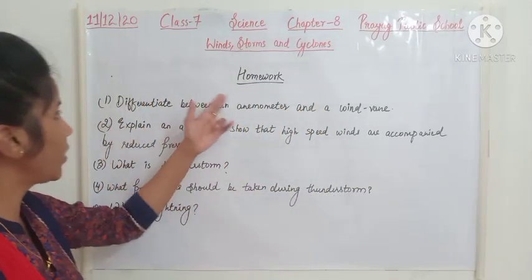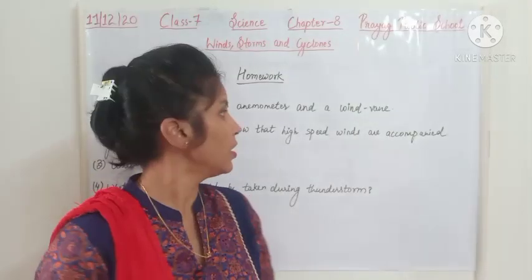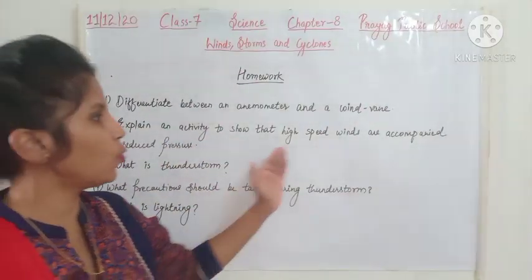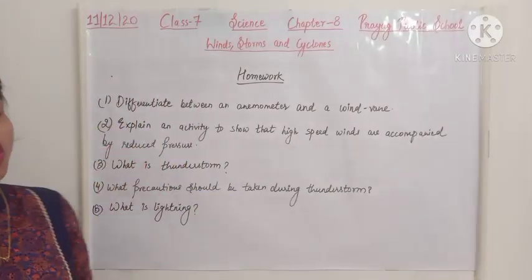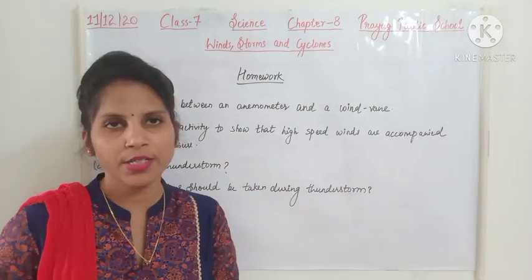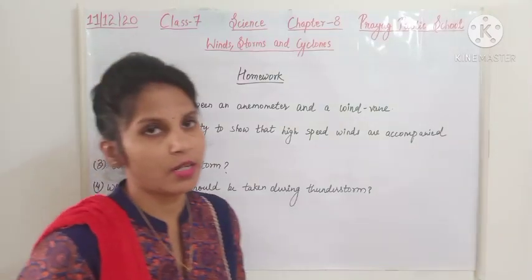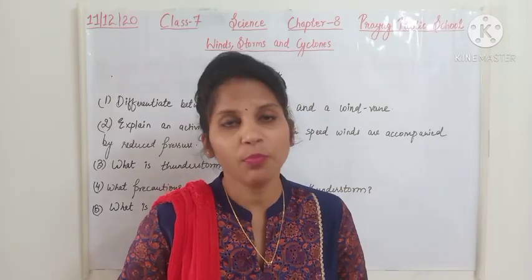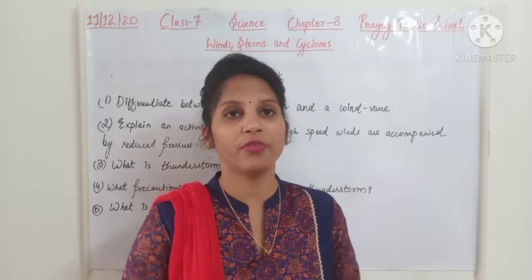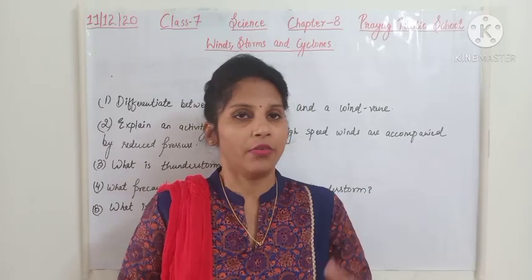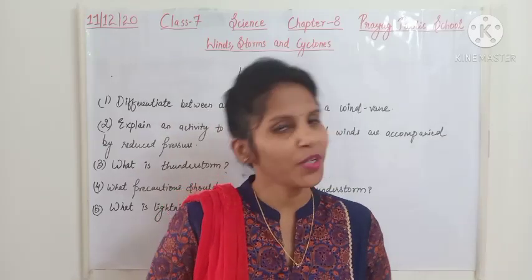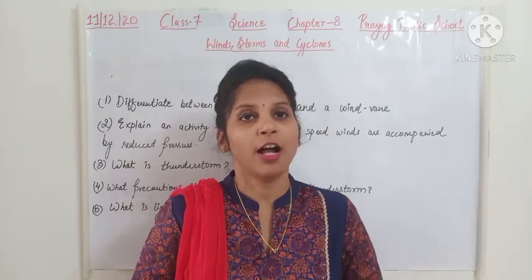That's all for today. Today's homework: question one, differentiate between an anemometer and a wind vane; question two, explain an activity to show that high speed winds are accompanied by reduced pressure; question three, what is a thunderstorm; question four, what precautions should be taken during a thunderstorm; question five, what is lightning. Go through the book and write all the answers. If you have any difficulty or query, you are free to ask me. In my next session I will be starting about the cyclone, so be prepared for a live class.